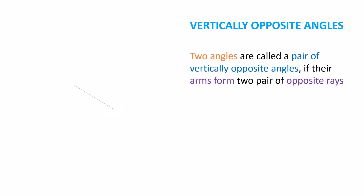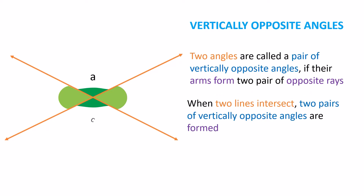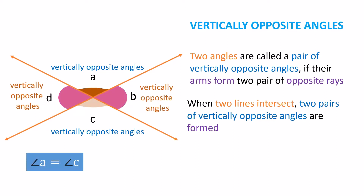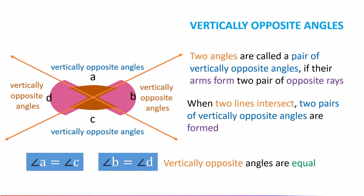Vertically Opposite Angles: Two angles are called a pair of vertically opposite angles if their arms form two pairs of opposite rays. When two lines intersect, two pairs of vertically opposite angles are formed. In this case, angle A equals angle C, and angle B equals angle D — they are vertically opposite angles. Vertically opposite angles are equal.